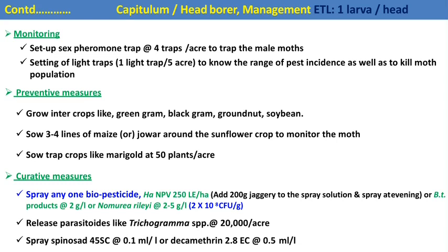For the management of Helicoverpa armigera in sunflower, for monitoring we can use a sex pheromone trap with Helilure, and we can also install a light trap for mass trapping to kill the moth. For preventive control, green gram, black gram, groundnut, and soybean are intercrop plants used to reduce the infestation of Helicoverpa armigera.